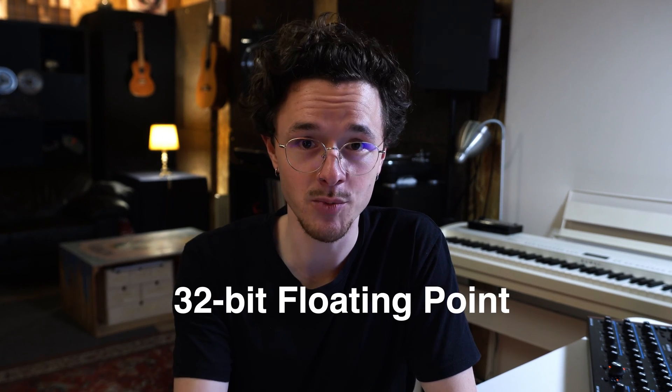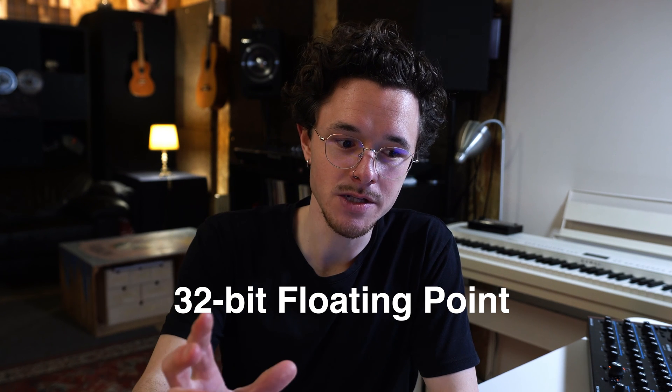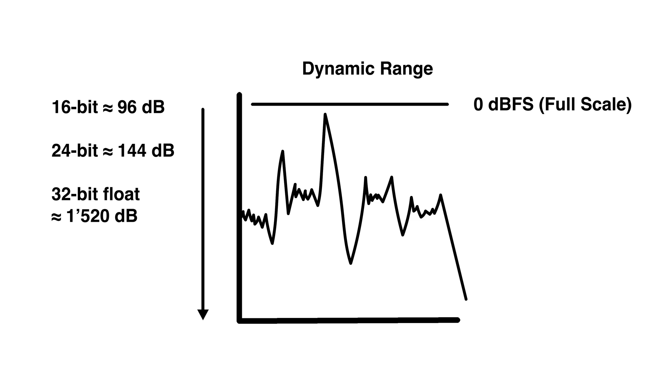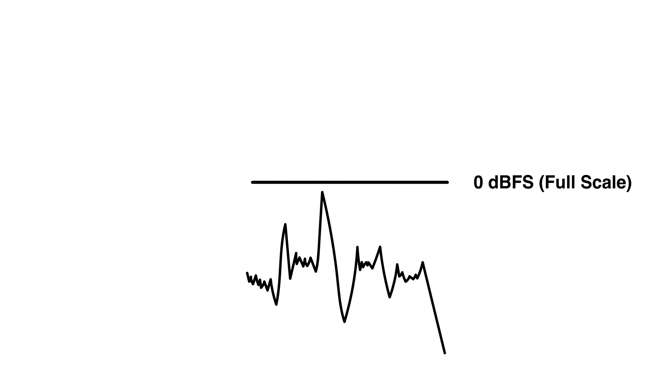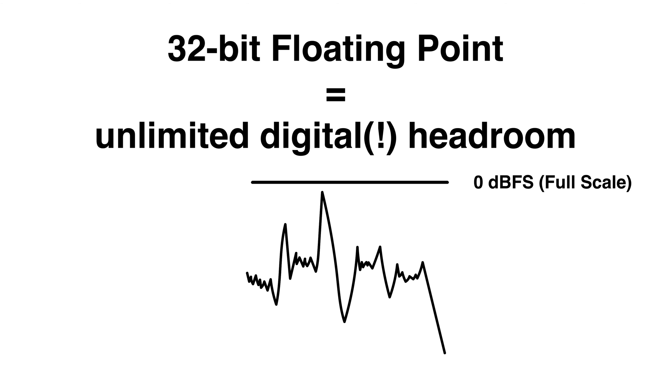Now there's even one more very magical thing which is called 32 bit floating point, and the floating point basically means that you now have 1520 dBs of dynamic range. And if something goes above 0 dB full scale you can just dial it down back again in post-production and it doesn't clip. So you basically have unlimited digital headroom.